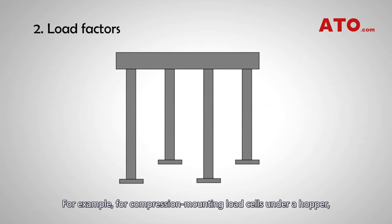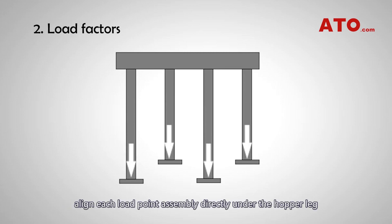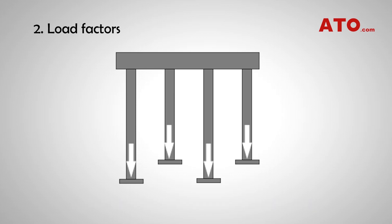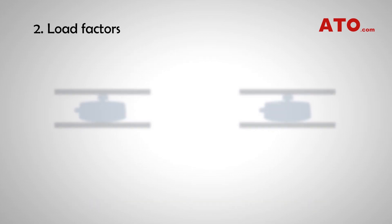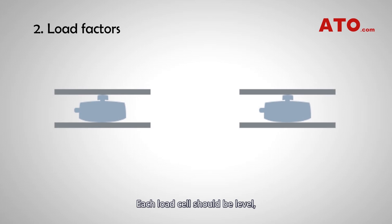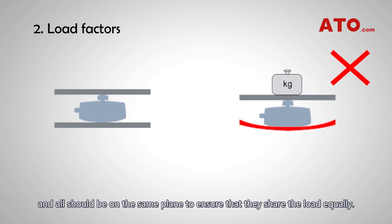For example, for a compression mounting with load cells under a hopper, align each load point assembly directly under the hopper leg to avoid pulling or pushing between assemblies on the other legs. Each load cell should be level, and all should be on the same plane to ensure that they share the load equally.